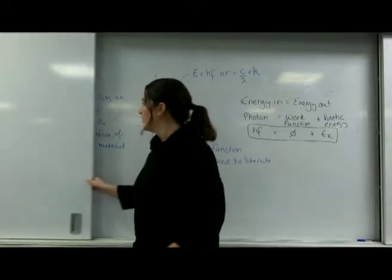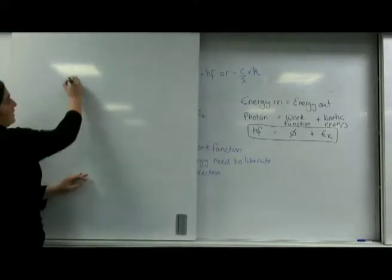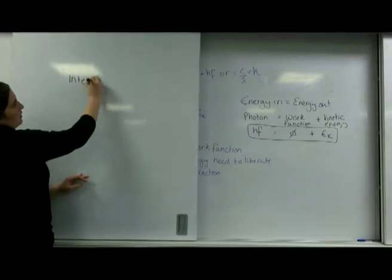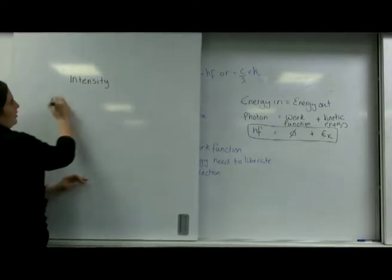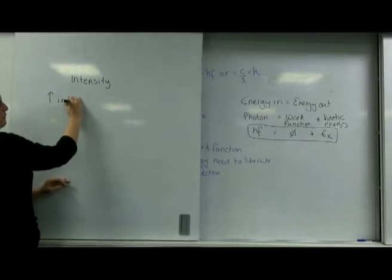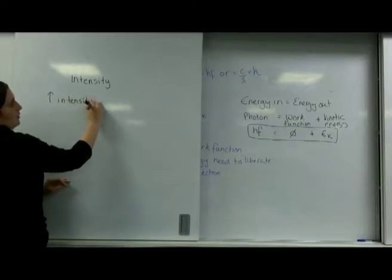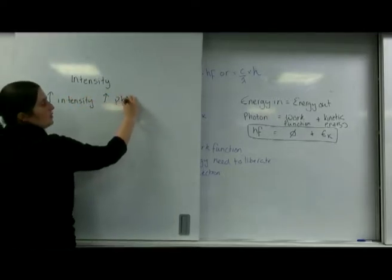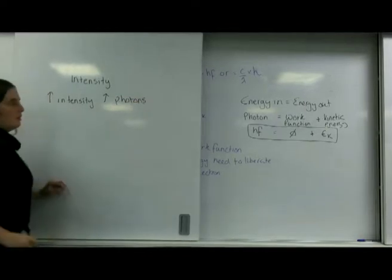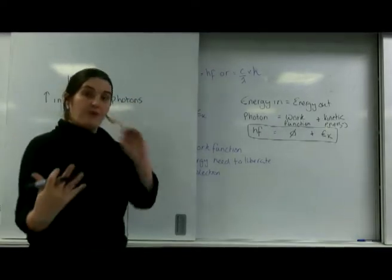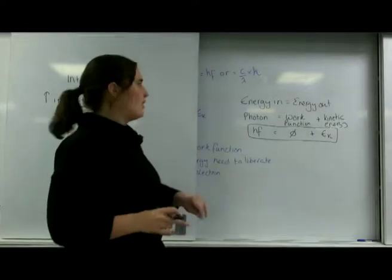So intensity, greater intensity increases the photons. If I have a really bright light, I have more photons being emitted than a really dim light.